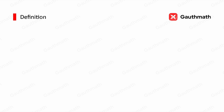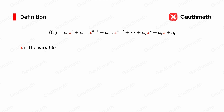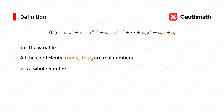So first, let's look at the definition. This is the standard form of a polynomial. The x here is the variable, and all the coefficients from a_n to a_0 are real numbers. Another thing you have to be careful about: all the exponents must be whole numbers. Let's see an example. f(x) equals (3/2)x to the power of 5 plus 5x squared plus 3. All the coefficients are real numbers and all the exponents are whole numbers, so it is a polynomial function.